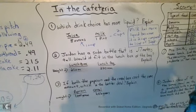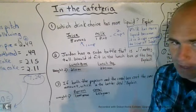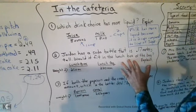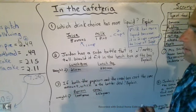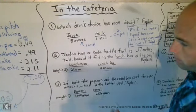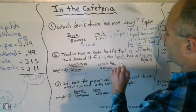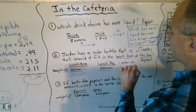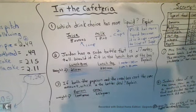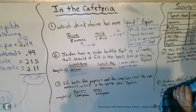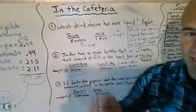Number two here, Jordan has a soda bottle that is 1,700 meters, not even a meter tall. Would it fit in the lunchbox or the bag? The lunchbox is 21 centimeters and the lunch bag is 230 millimeters. I'll give you a little tip here before you finish and solve. For starters, 1 meter equals 100 centimeters. And 1 centimeter equals 10 millimeters. So what's it going to fit in? Go ahead and I'm going to hit the pause button for you to solve.